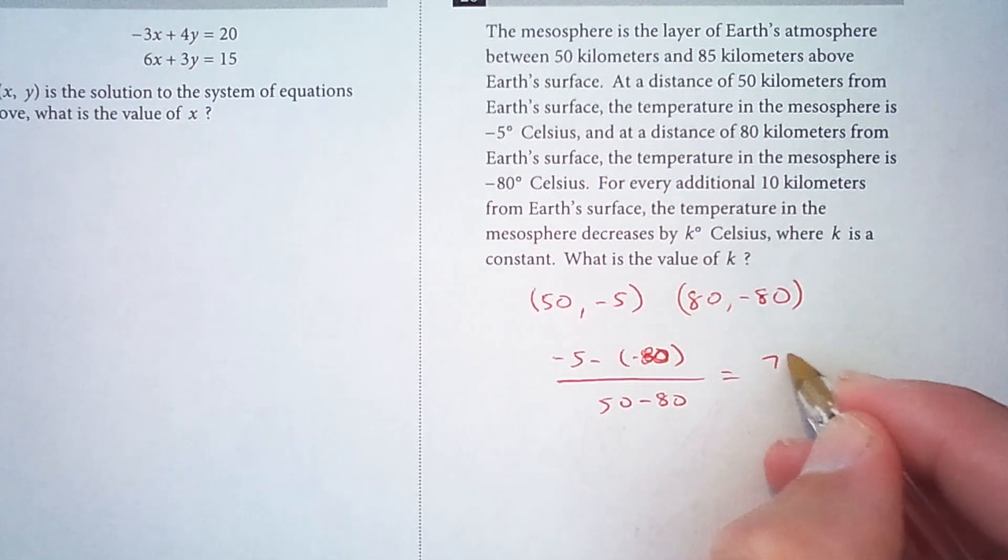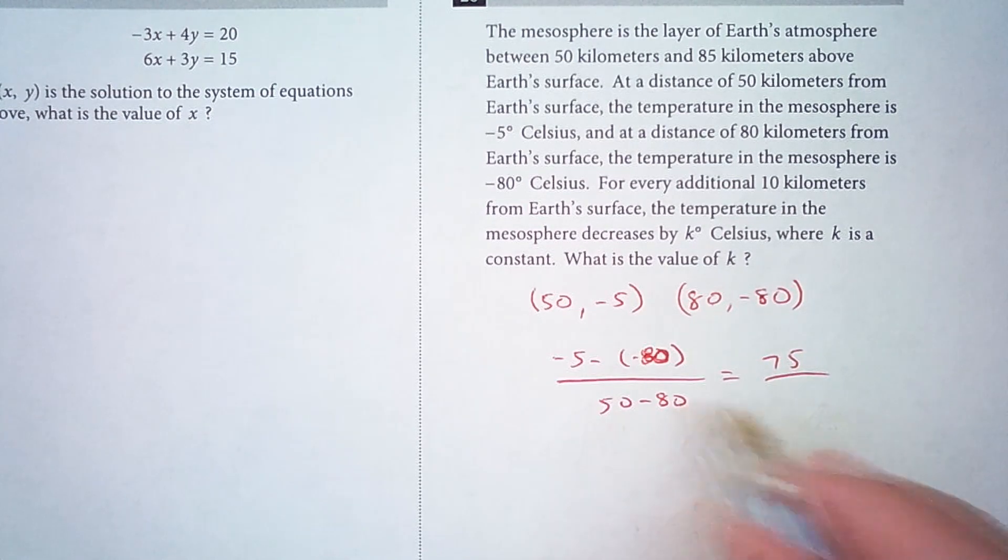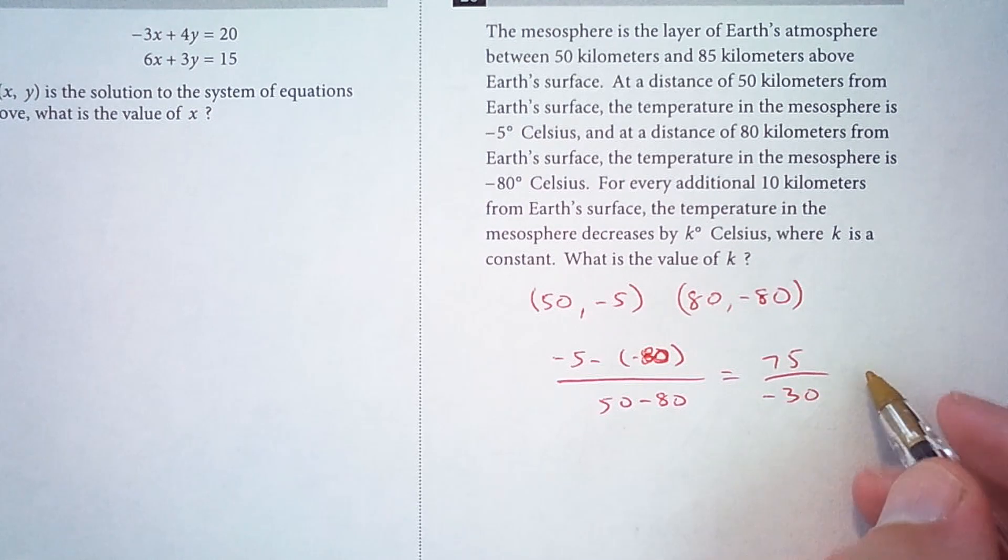So that's negative 5 plus 80, that is 75. 50 minus 80 is negative 30, so we have negative 75 over 30.